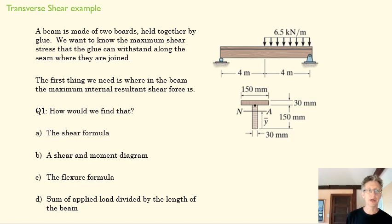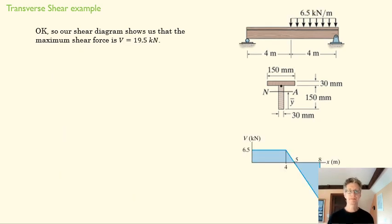So the first thing we need to know is the maximum internal resultant shear force along this beam. Where is it going to experience the largest shear force in the vertical direction in this case? So how do we find that? Pause and see if you can answer that question. Okay, so the answer is that we need a shear diagram. That's our starting point here. If we're interested in the largest shear stress, we have to find the point on the board where the shear force is going to be largest. Because wherever that shear force is largest, the shear stress is going to be largest too. And to do that, we solve a shear diagram like this.